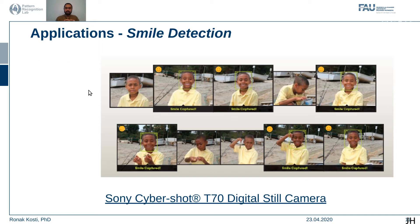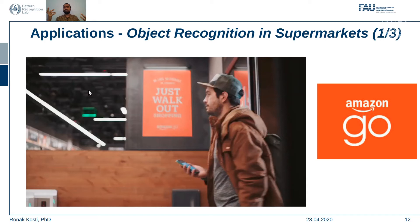Another quite interesting and recent application is Amazon Go — object recognition in a supermarket. If you have an Amazon account, you enter this specialized store, buy items, and whatever you buy is tagged and billed directly to your Amazon account. You don't have to stand in a checkout line — you just go in, buy what you want, keep it in your bag and leave. It's like a dream for any shopper.